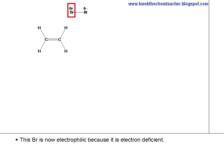This Br is now electrophilic because it is electron deficient. It can now attract pi electron pairs to it. The pi electrons are attracted to the electrophilic Br.